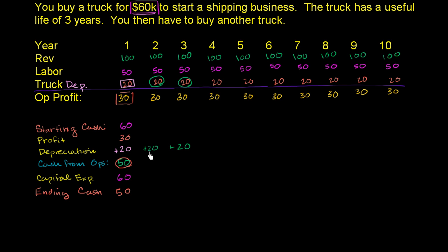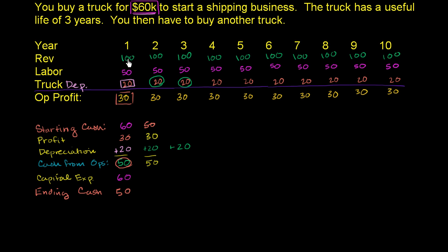Moving to the next period: our starting cash is $50,000 — the ending cash of the previous period. Our profit, once again, is $30,000. Add the depreciation back to the profit and you get $50,000 cash from operations — the same as the previous year — which makes sense because our operations really haven't changed.